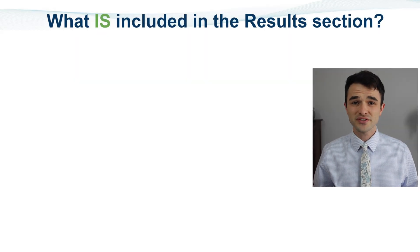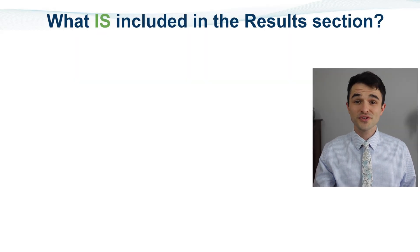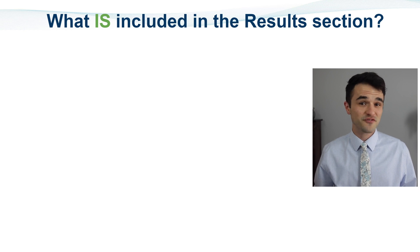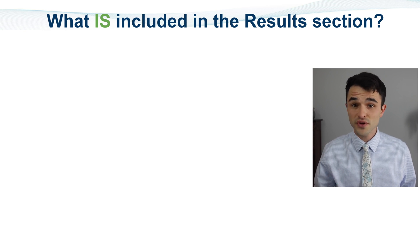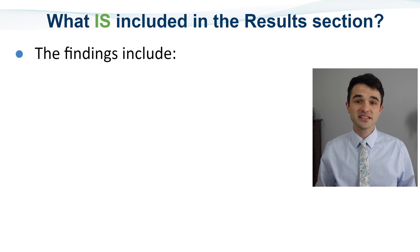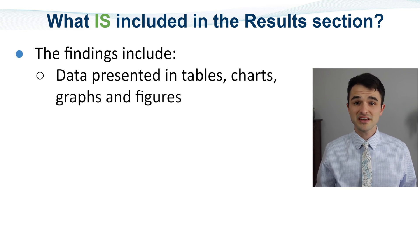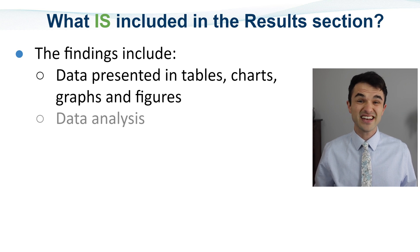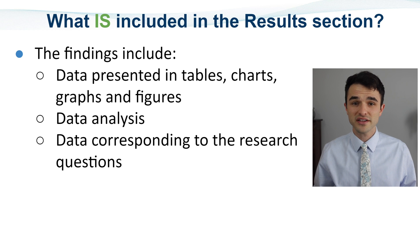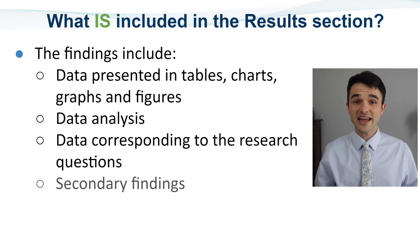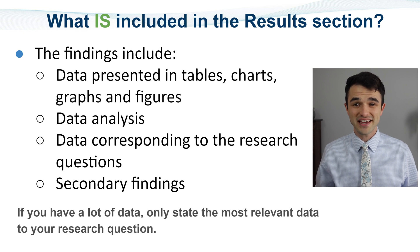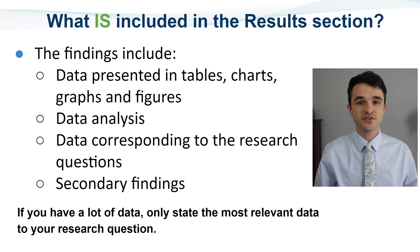What is included in a results section? The results section should describe the findings of your study and does not need much else. The findings include data presented in tables, charts, graphs, and figures, data analysis, data corresponding to the research questions, and secondary findings. If you have a lot of data, only state the most relevant data to your research question.